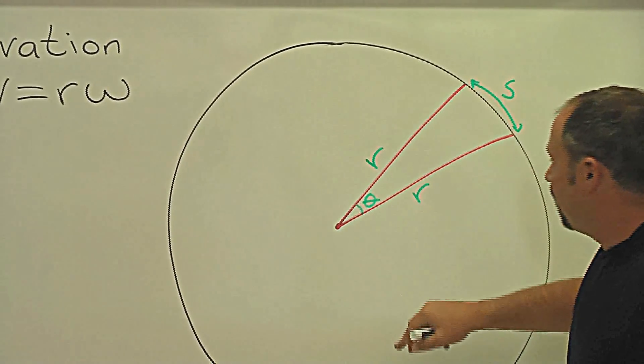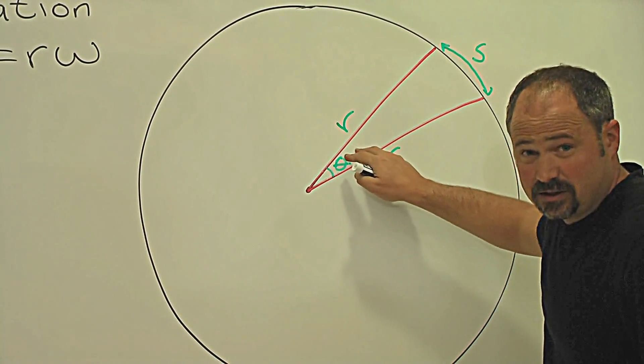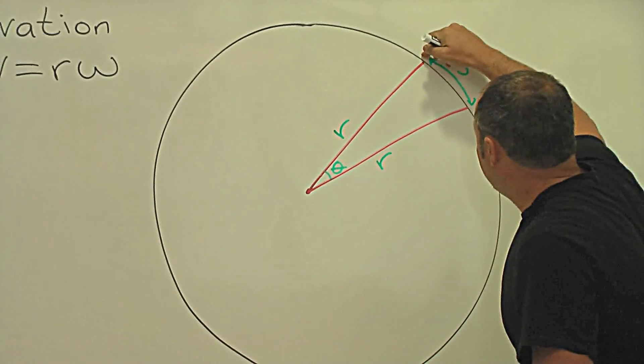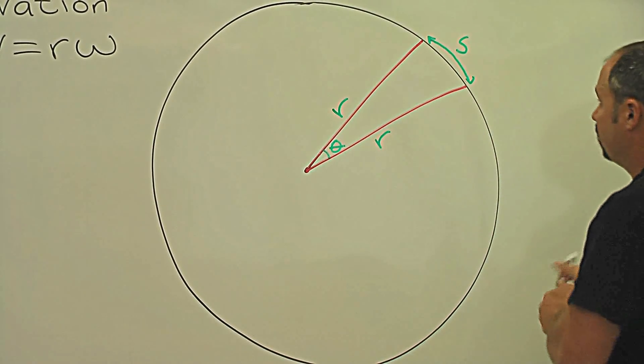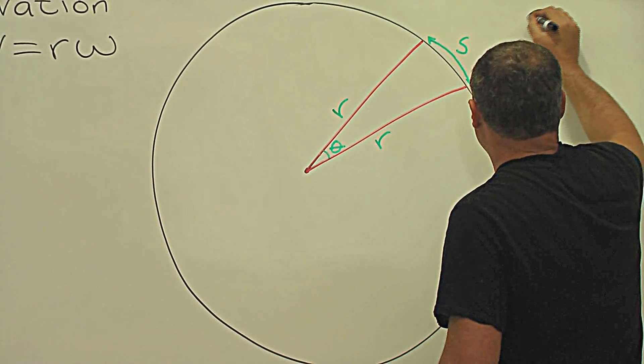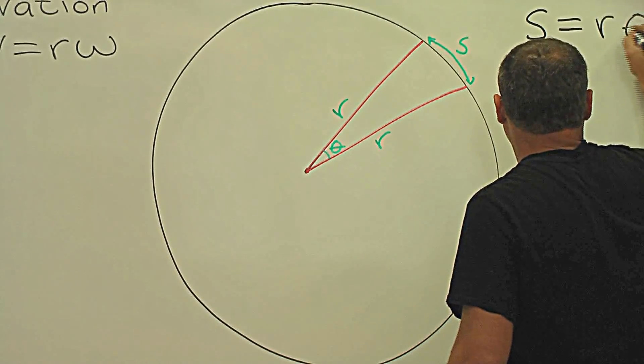The circle has radius r, and when it traces out this much angular distance, call it theta, it's covering this distance s, linear distance s. We know that s, the arc length, is equal to r theta.